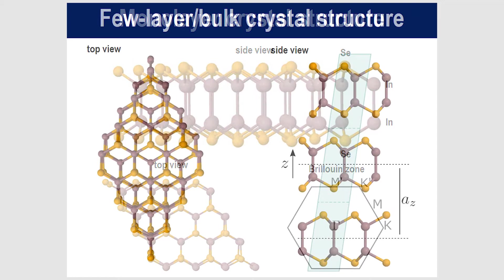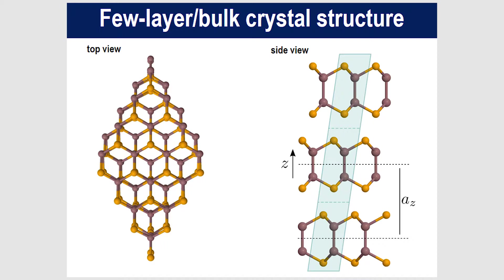This is different from graphene. When you make this into few layers or bulk, the selenium atoms like to avoid each other — the orange selenium atoms sit above the middle of a triangle of selenium atoms in the layer below. There is a constant relative shift each time you add a layer, and the bulk crystal is often known as the 3R polytype for that reason.